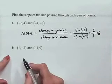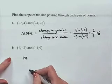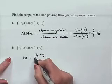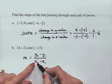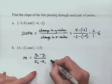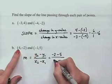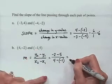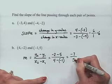For part B, we have the points (4, -2) and (-1, 5). Slope M equals Y-sub-2 minus Y-sub-1 over X-sub-2 minus X-sub-1. We take the Y coordinate from one point minus the Y from the other, and the same for X. So we get (-2 minus 5) over (4 minus (-1)). The numerator is -7, and the denominator is 4 plus 1 equals 5. So our slope is negative seven-fifths.